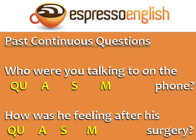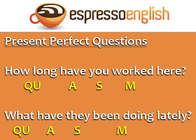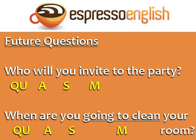In the past continuous, the auxiliary verb is 'were' or 'was': 'Who were you talking to on the phone?' and 'How was he feeling after his surgery?' This formula also works with present perfect questions. In this case the auxiliary verb is 'have' or 'has': 'How long have you worked here?' and 'What have they been doing lately?'